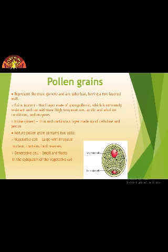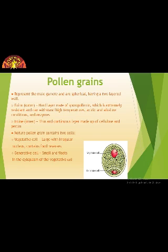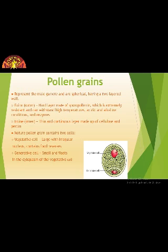Although the exine is very hard, made up of sporopollenin, there are some pores — small holes — where sporopollenin is absent, so that when the pollen tube arises, it can come out through these pores. Pollen grains are well preserved as fossils because of the presence of sporopollenin. The exine exhibits a fascinating array of patterns and designs in various species. The inner wall of the pollen grain is called the intine, which is a thin and continuous layer made up of cellulose and pectin.